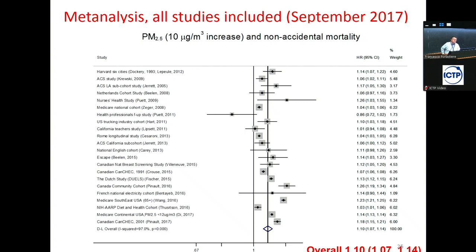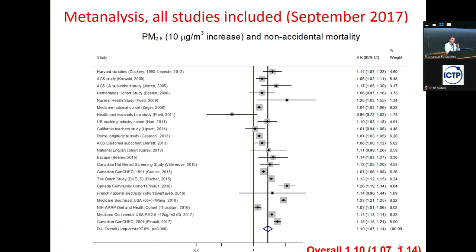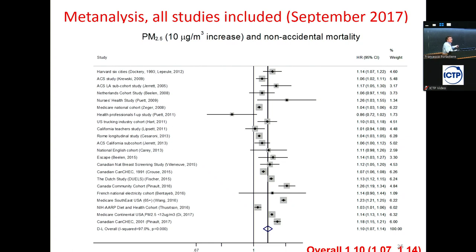Regarding terminology: the terms relative risk, incident risk, and increased risk used across papers are essentially the same concept. For cohort studies using Cox proportional models, what comes out is the hazard ratio, which we call relative risk in more familiar terms. To transform relative risk into a percentage increase in risk, you subtract one and multiply by 100 — so for instance, 1.1 means a 10% increased risk.